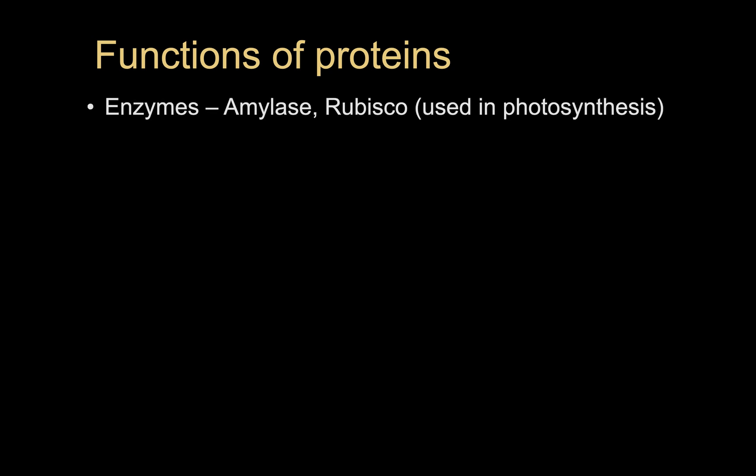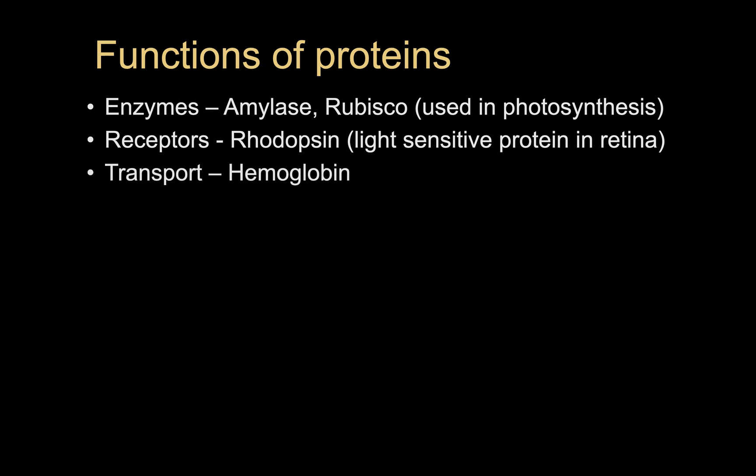We can use proteins as enzymes. For example, amylase is an enzyme that is found in saliva to break down starch. And also, you may at some point come across Rubisco. If you're studying photosynthesis, it too is an enzyme. We may have proteins as certain receptors. For example, in the eye, there is a light-sensitive protein in the retina known as rhodopsin. We could have transport, for example, of oxygen, hemoglobin. For movement in your muscles, you have muscle structures made up of two proteins known as actin and myosin.